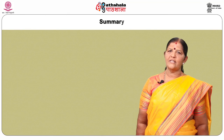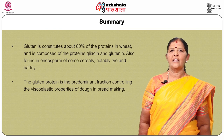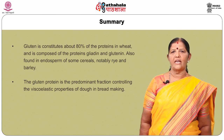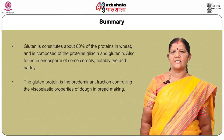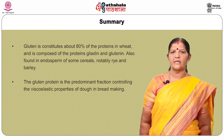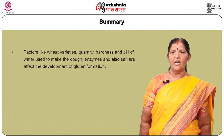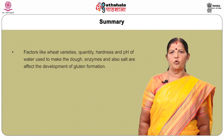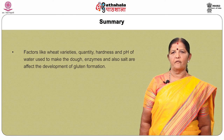To conclude: gluten constitutes about 80% of the proteins in wheat and is composed of the proteins gliadin and glutenin. It is also found in the endosperm of some cereals, notably rye and barley. The gluten protein is the predominant fraction controlling the viscoelastic properties of dough in bread making. Factors like wheat varieties, quantity, hardness and pH of water, enzymes and salt also affect the development of gluten formation.